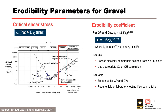With regards to gravel, do not use Briot et al. 2019 regression equations for coarse data sets of gravel. Critical shear stress for gravel can be estimated using the D50 particle size. The suggested guidance from the Risk Management Center for erodibility coefficient is provided on this slide. For GP and GW soils, use the Simon et al. 2011 relationship. For GS soils, use either the CL or CH relationship based on the plasticity of the materials scalped from the number 40 sieve. For GM soils, screen for GP and GW, and if the screening fails, do field or laboratory testing.